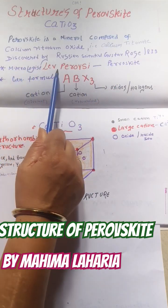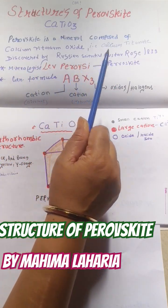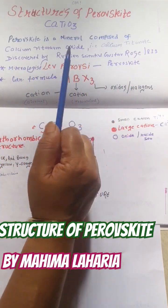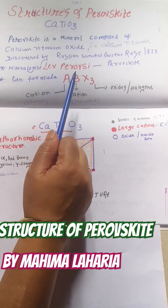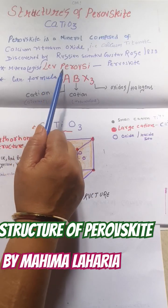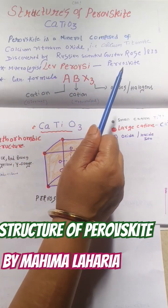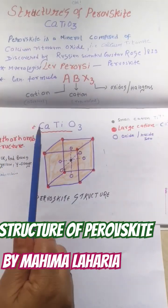It was discovered by the Russian scientist Gustav Rose in 1839. The name comes from Count Perovski, so the name is perovskite.